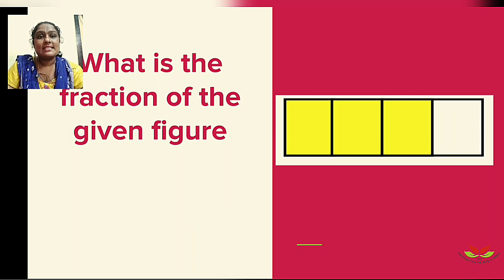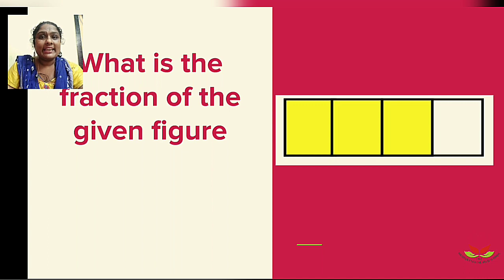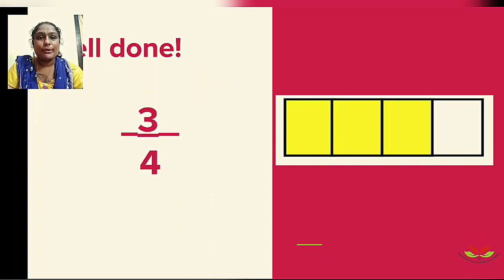Now let's try to answer this: what is the fraction of the given figure? Let's count how many parts are shaded — yes, three parts are shaded, so three goes in the numerator. The total number of parts is four, so four goes in the denominator. The fraction is 3 upon 4.